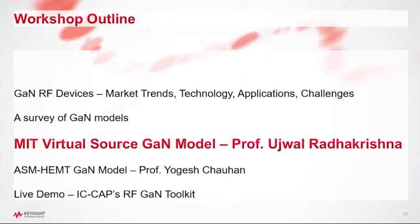Thank you, Raj, for the introduction. In the previous section we focused on generic compact models — empirical models and the DynaFET. In this section I'll focus on one of the two industry-standard compact models available in almost all commercial simulators: the MVSG model, the MIT Virtual Source GaN FET model. It's a physics-based model where terminal characteristics — currents, charges, and trapping mechanisms — are captured physically by describing how electrons flow in the 2DEG under given drain, gate, and temperature bias conditions.